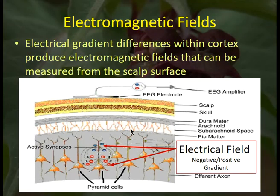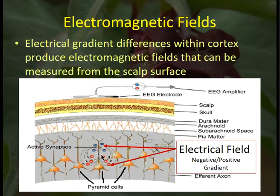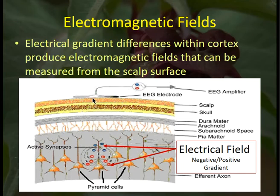We are measuring electromagnetic fields that occur in the cortex, but we're measuring them from the scalp surface. There is a positive-negative gradient within the cortex created by cellular mechanisms that transport mineral ions — containing positive and negative electrical charges — into and out of cells. This creates electromagnetic fields in the millivolt range in the cortex, subsequently attenuated by all the structures in between and reaching the scalp electrode as microvolt-level electrical readings, which are then sent to the EEG amplifier to be processed.